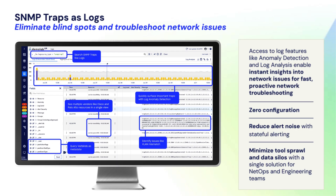SNMP traps plays really well with logs — gives you instant insight into what's going on in your network and anything else that can send traps. Essentially zero configuration, it's ready to go out of the box; you just have to enable it on the collector and point your traps at it. You get to see all your other logs in the same interface, whether they came from syslog or some other system. And you can automatically close alerts with stateful alerting, really lowering the amount of management and time you have to deal with with incoming traps.